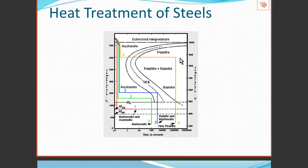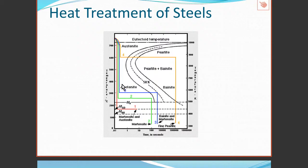To read this diagram: to the right of the end curve, we have a description of what the final state would be. Up here we're going to have pearlite; down here, pearlite and bainite at lower temperatures. In this area we have austenite, and as we go down here, we're going to see martensite. These colored lines represent a heat treatment process.